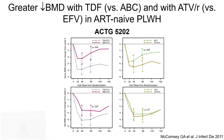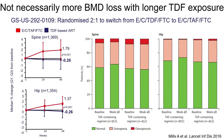Regarding bone, TDF compared with abacavir leads to a higher decline in bone mineral density, but this happens primarily in the first year of therapy — in antiretroviral-naive patients and when switching from already suppressed patients. The effect afterward is relatively stable. TDF use is not necessarily associated with bone mineral density loss over time, particularly in patients who are bone healthy.